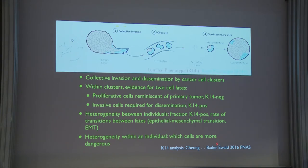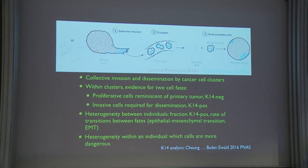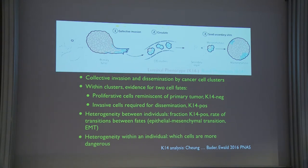Andy and I published recently using different protein markers. K14 may be required for dissemination but actually disappears after the tumor establishes at the secondary site. Circulating tumor cell clusters look like mixtures of K14-expressing and K14-non-expressing. As it grows out, we see outgrowth of the non-K14 expressing cells. Whether that's the non-K14 cell outgrowing or a switching between different states is a very interesting open question.